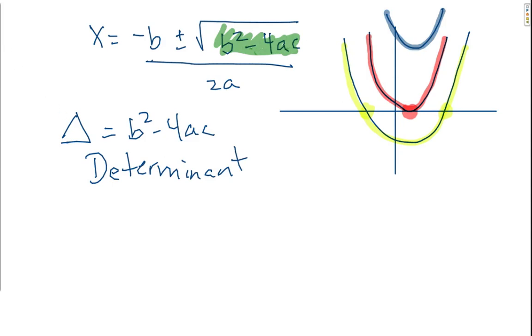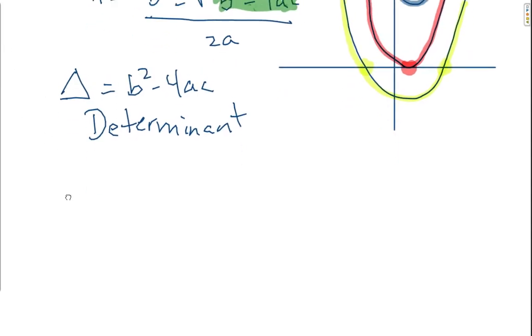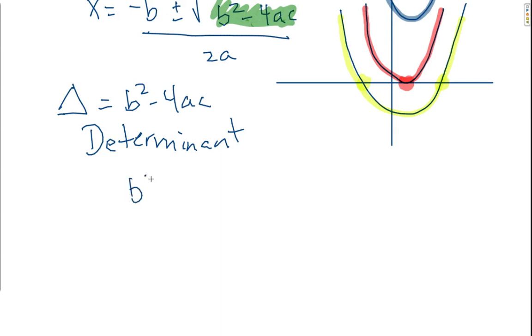And so, I know the determinant if b squared minus 4ac is positive, that means there are two real roots. Roots, x-intercepts, solutions, zeros, all the same thing.